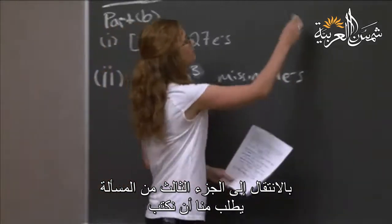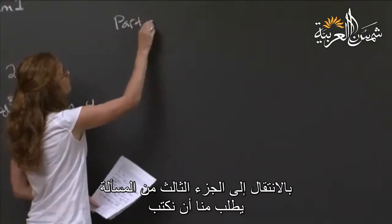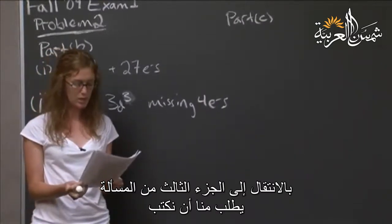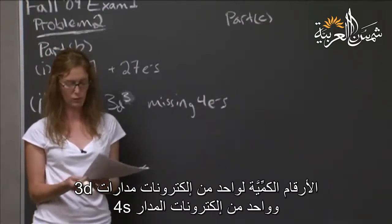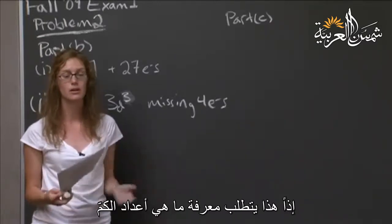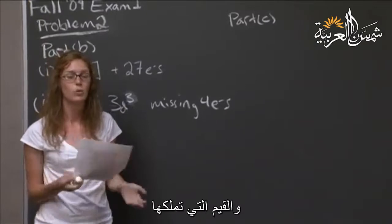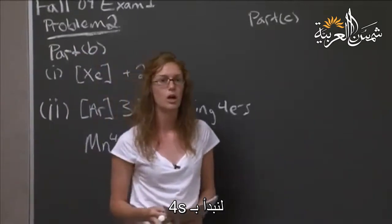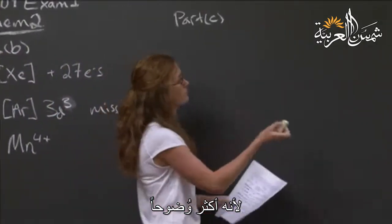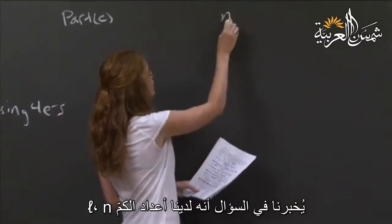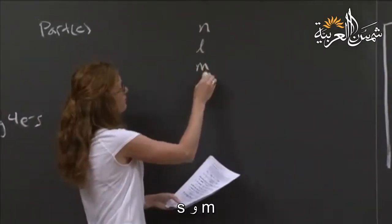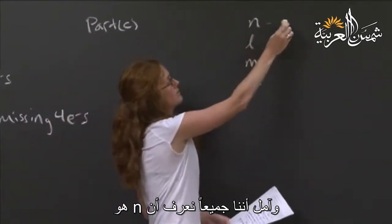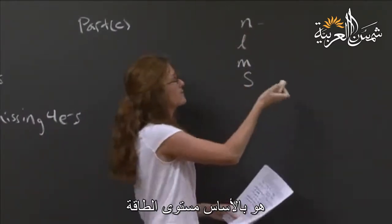Moving on to part C. It asks us to write the quantum numbers of one of the 3d and one of the 4s electrons in iron. This requires a knowledge of what quantum numbers are and what values they can have. Let's start with the 4s because that's a little more straightforward. He tells us that we have an N quantum number, L quantum number, M, and S. And hopefully we all know that N is the principal quantum number. It's basically your energy level.